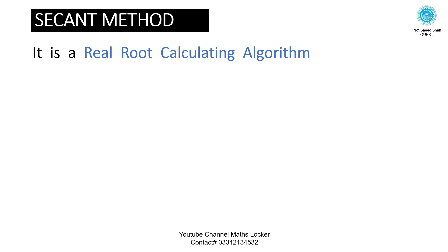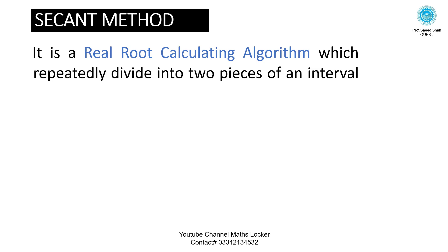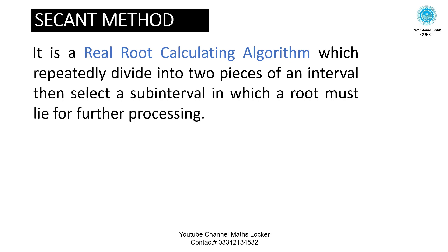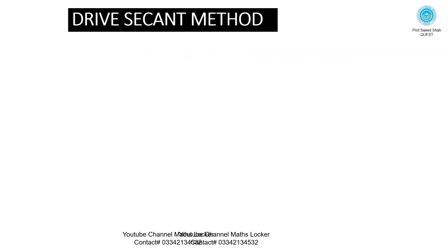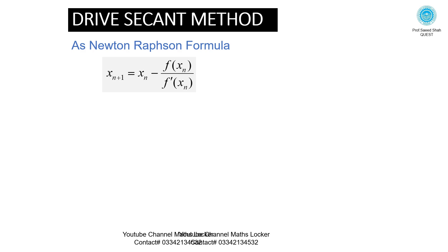The Secant Method is a real root calculating algorithm which repeatedly divides into two pieces of an interval, then selects a sub-interval in which a root must lie for further processing. Note: it is a closed or two-point method. Write the Secant Method as Newton's formula: x_{n+1} = x_n - f(x_n) / f'(x_n). Therefore, f'(x_n) is approximately equal to f(x_n) - f(x_{n-1}) divided by x_n - x_{n-1}.